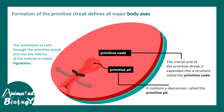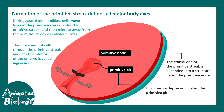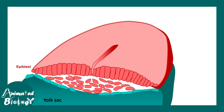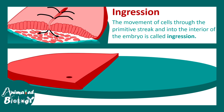The cells move through the primitive streak inside the embryo, and this process is known as ingression. During gastrulation, epiblast cells move towards the primitive streak, enter through it, and then migrate away from the primitive streak as individual cells. Following the arrows: the cells move towards the primitive streak, through it, and away from it into the inside of the embryo. This is the ingression process.